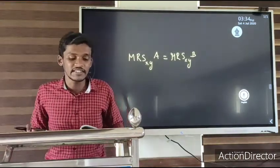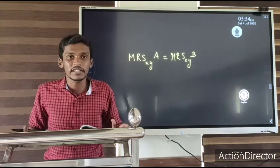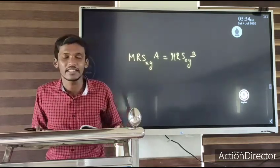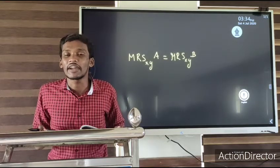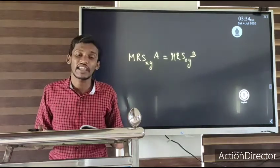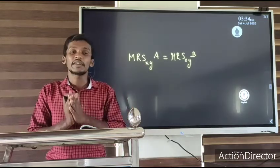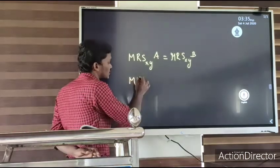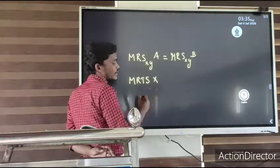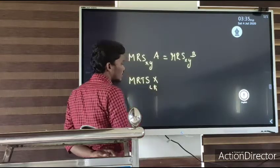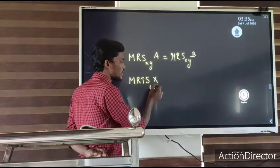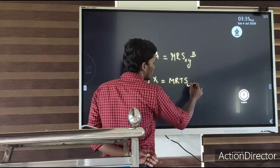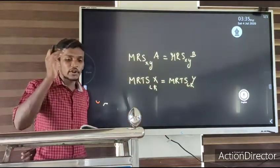The second condition for Pareto Optimality is efficiency in the allocation of inputs. For allocation efficiency, the marginal rate of technical substitution of commodity X must be equal to the marginal rate of technical substitution of commodity Y. That is, the marginal rate of technical substitution of labor for capital for commodity X must be equal to the marginal rate of technical substitution of labor for capital for commodity Y. That is the productive efficiency of an economy.